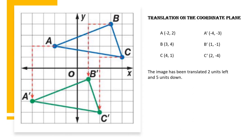I want you to take a look at your points between A and A prime, B and B prime, and C and C prime, and see if you notice a connection. Looking at the x-coordinates: -2 and -4, 3 and 1, 4 and 2. And looking at the y-coordinates: 2 and -3, 4 and -1, 1 and -4. See if you can notice any connection between those highlighted numbers.